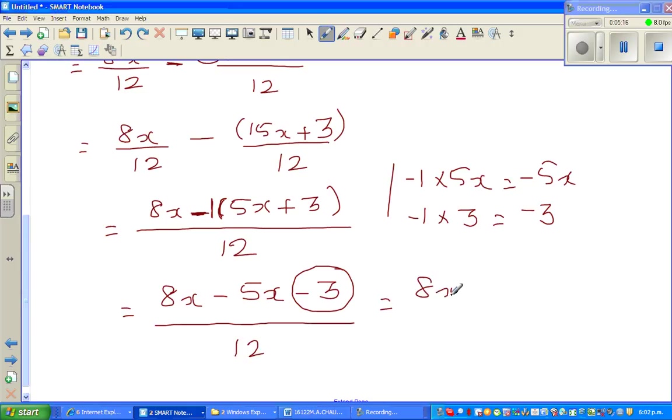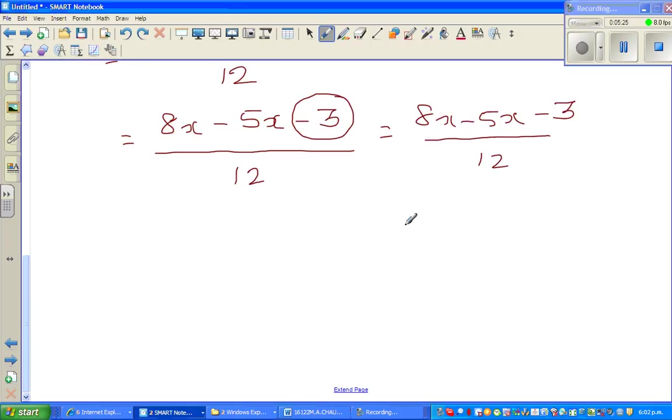Finally this is 8x minus 5x minus 3 over 12. You can do a few more steps here, so 8x minus 5x is 3x, so 3x minus 3 over 12.